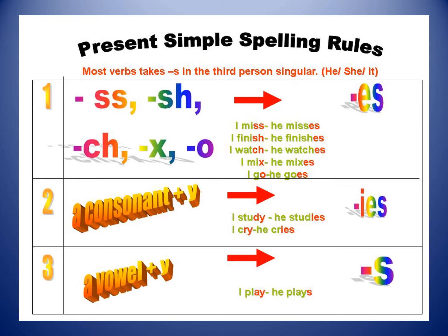But if I have a vowel before my Y — A, E, I, O, U — I will not cross the Y. If you see A, E, I, O, or U before the Y, keep the Y as it is and just add -S only. So before crossing the Y, check the letter before it: if it's a consonant, cross the Y; if it's a vowel, keep the Y.